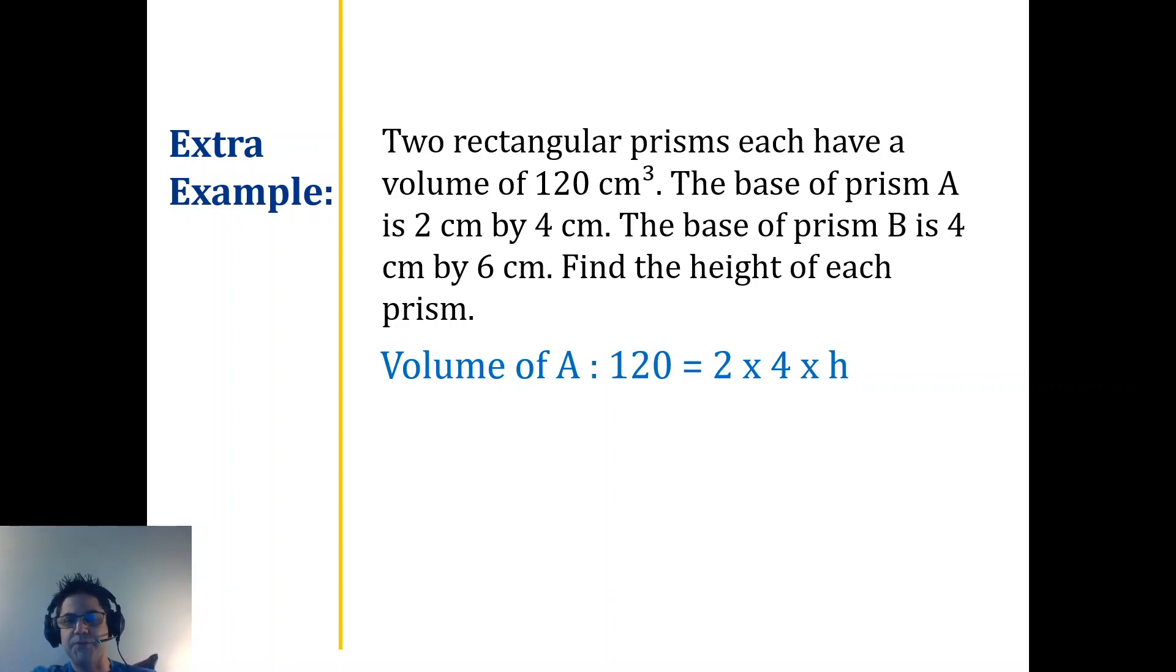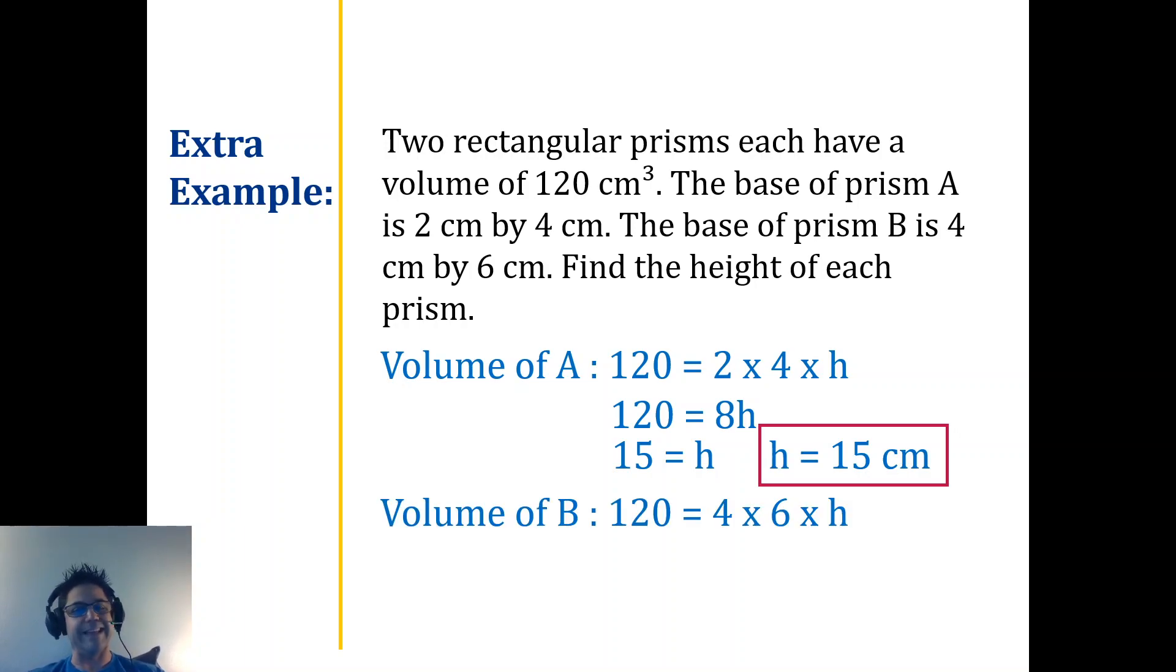So our prism is going to be 15—don't forget your units—15 centimeters. And then our second problem, volume B, the exact same height again but this time it's represented as a 4 by 6 times the height. Use your parentheses there. We know 4 times 6 is 24, we're going to divide on both sides. So what is our height? If you divide both sides by 24, your height is going to be 5, or 5 centimeters. So not only are we working on our volume formulas there for our prisms, rectangular prisms, but we're also remembering how to solve equations. Volume A divided by 8 both sides, and volume B divided by 24 both sides.